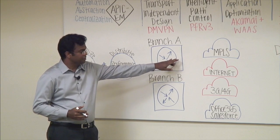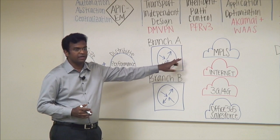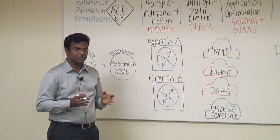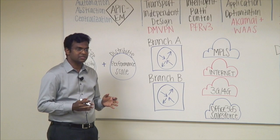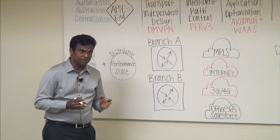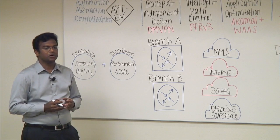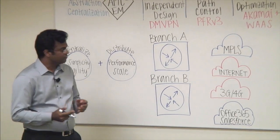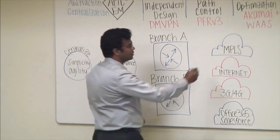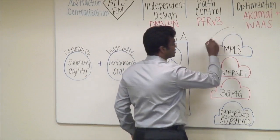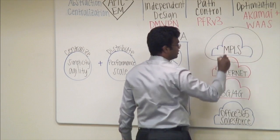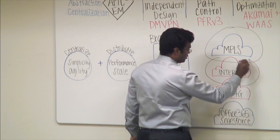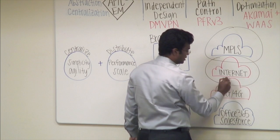What we do is we will put the underlay in a separate virtual routing instance — what we call VRFs — and then we will put the overlay on top of it. For the overlay we choose DMVPN, so we put an overlay on all the links.